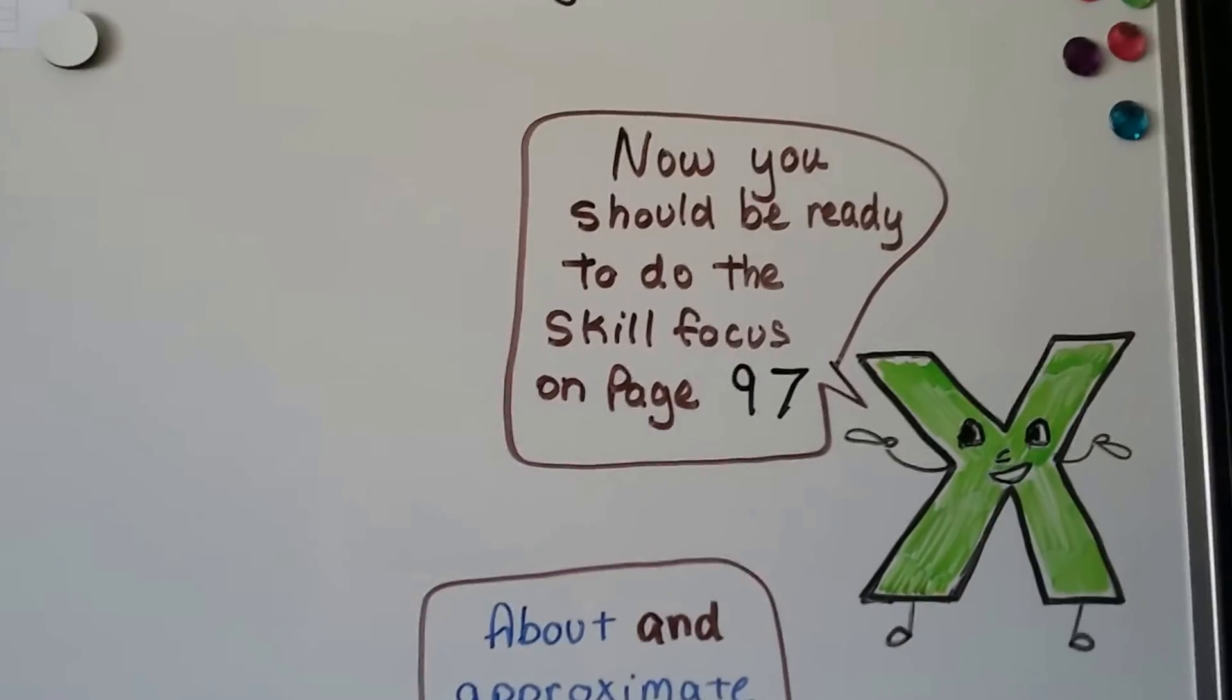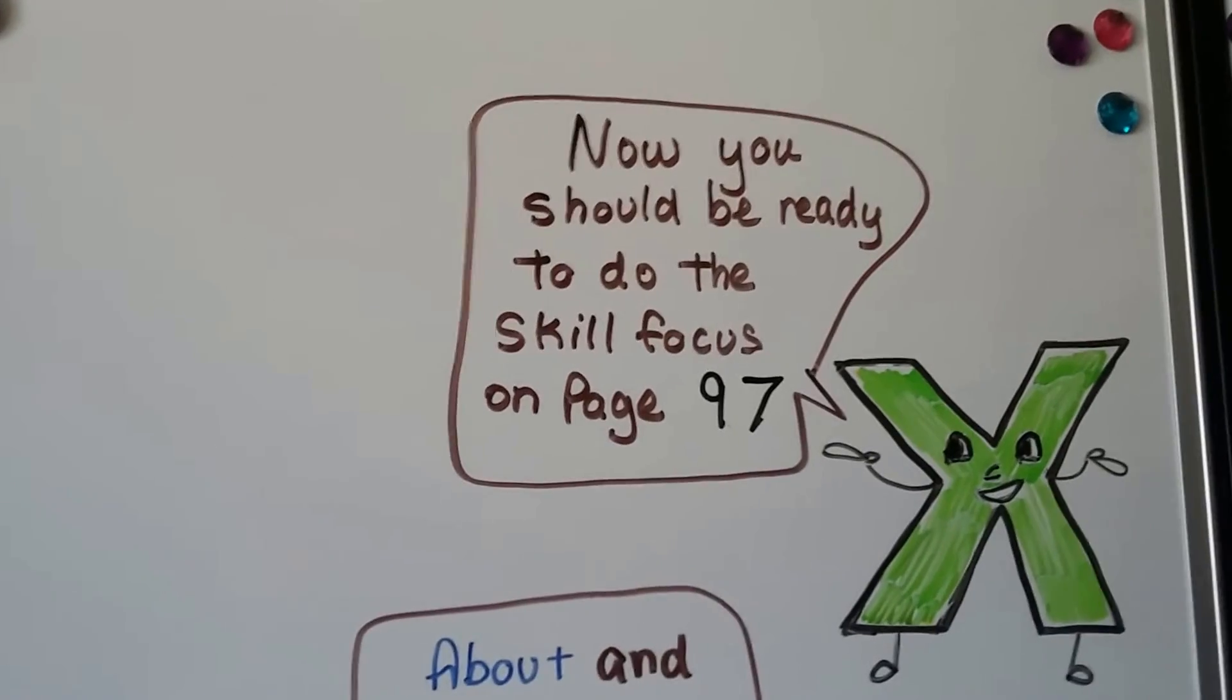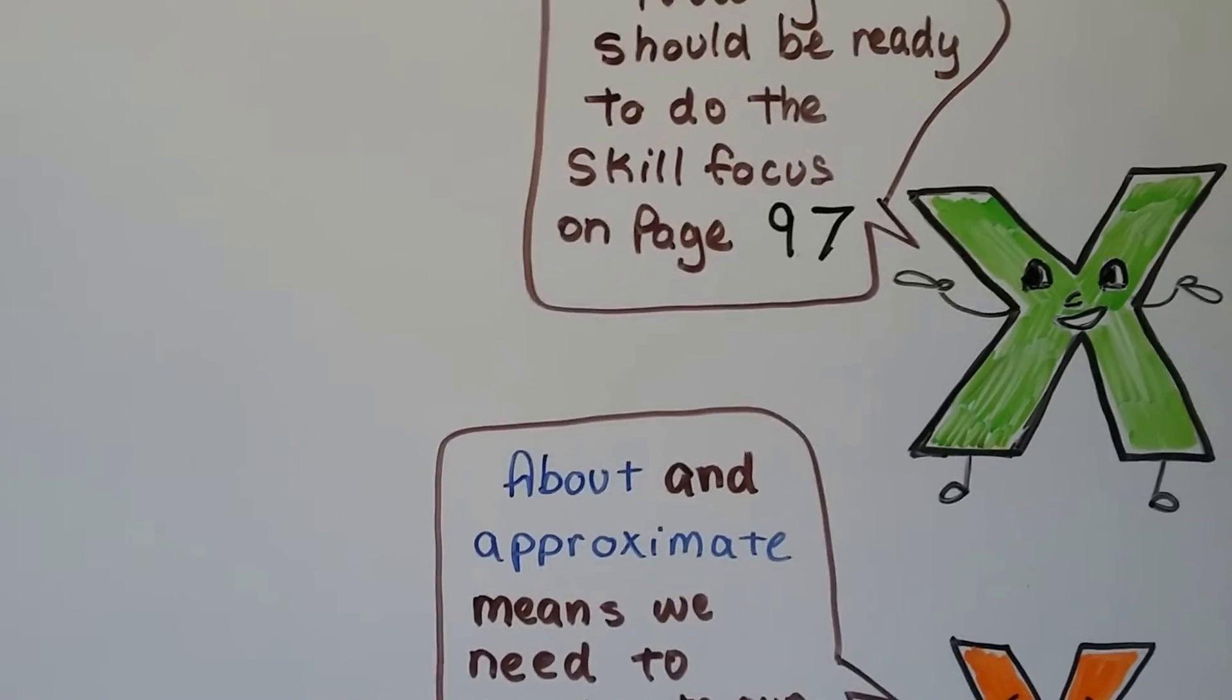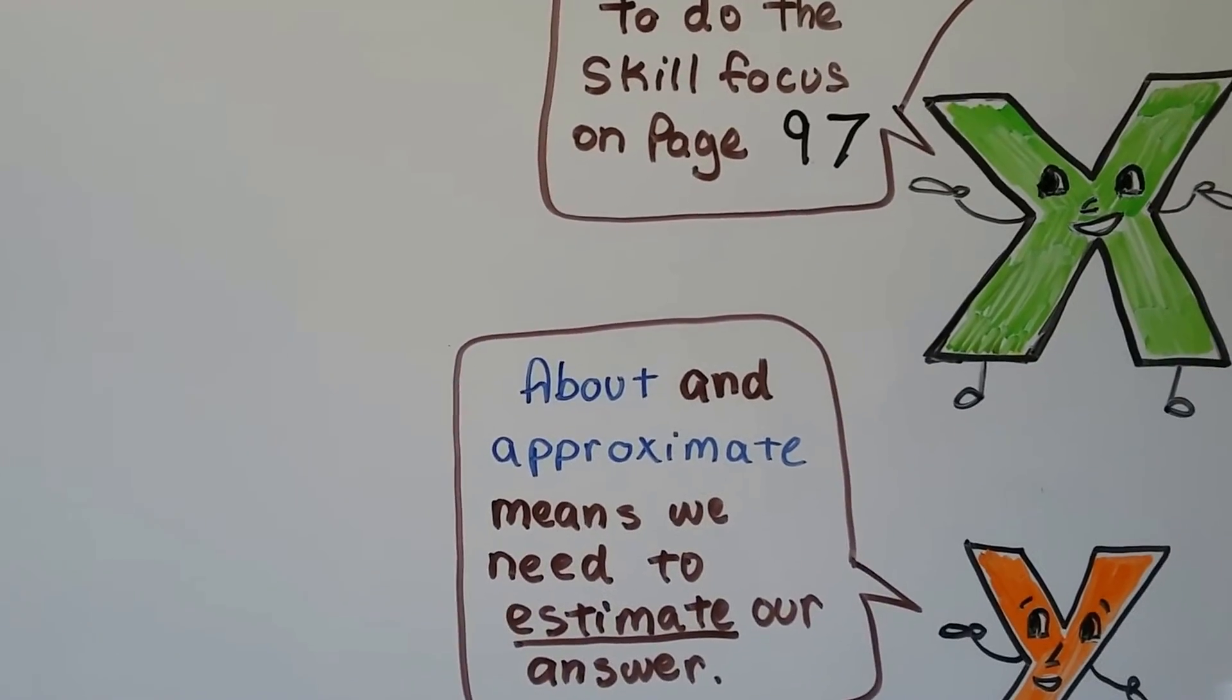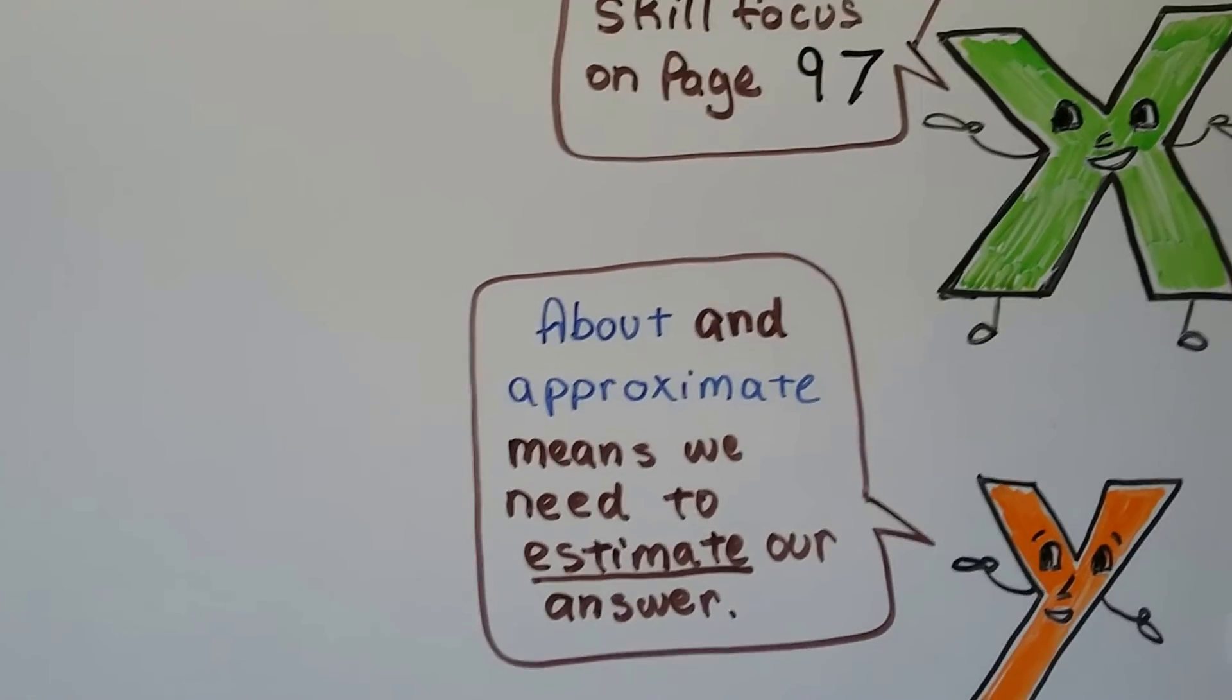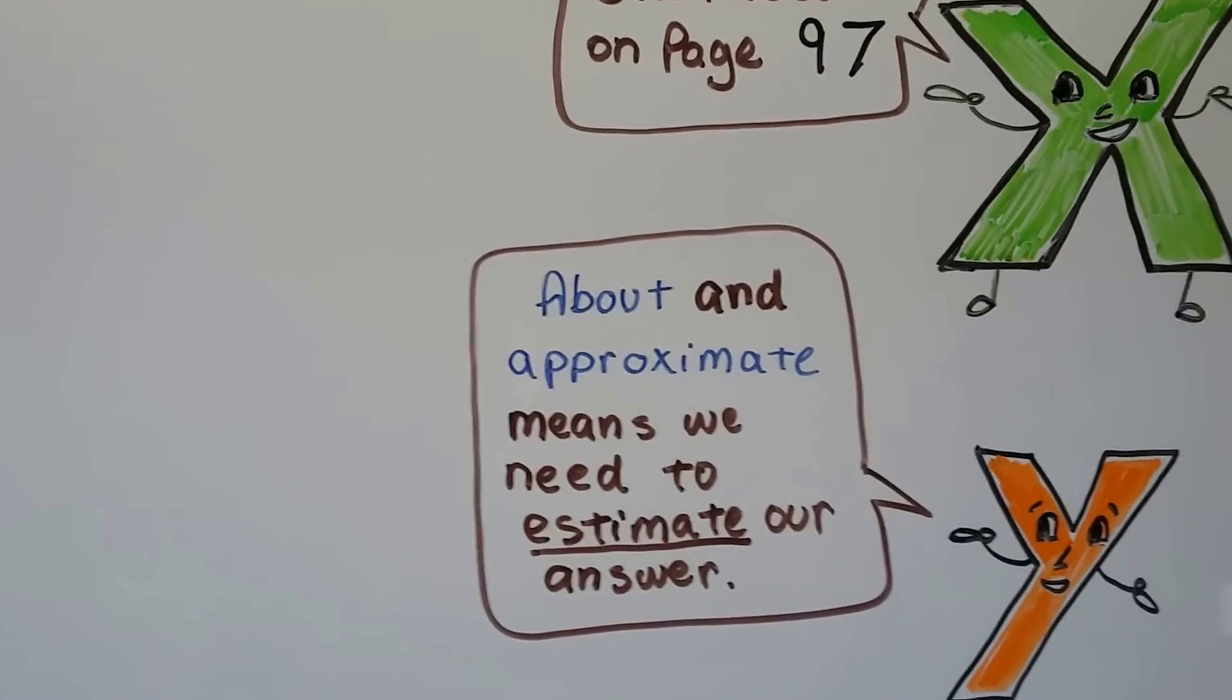Now you should be ready to do the skill focus on page 97. Pay very close attention to the numbers and try to round correctly. Remember to use the benchmarks of more than half and less than half. Remember that 'about' and 'approximate' means we need to estimate our answer.